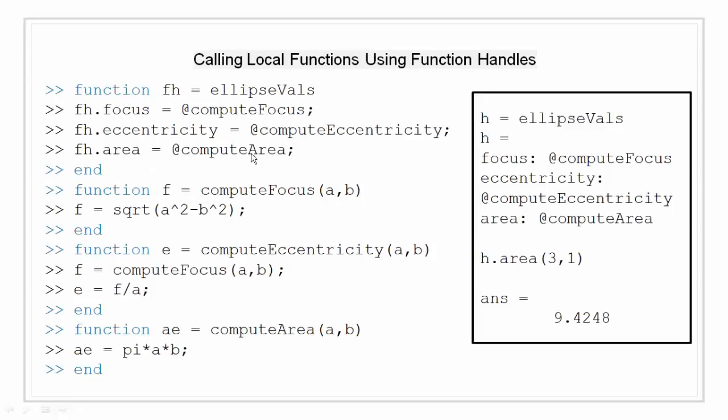Calling local functions using function handles. We can call local functions using function handle. The example here explains how to create handles to local functions. If a function returns the handles to a local function, you can call the local functions outside of the main function. This way we can have multiple callable functions in a single file. Basically this ellipseVals is a main function that will be called from outside and this function will return the structure of function handles to the calling variables. So we have three local functions that is computeFocus, computeEccentricity and computeArea.